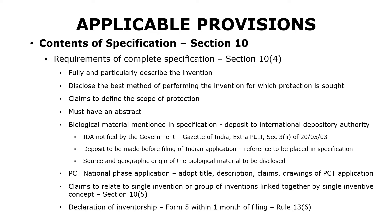Section 10(5) provides a very important requirement pertaining to the claims in the complete specification. It says that the claims should relate to a single invention or a group of inventions that are linked together by a single inventive concept. One patent application could relate to a single invention only, or the group of inventions should be linked by a single inventive concept. If there are multiple inventions in a patent application, you may have to divide the application at a later stage to derive different divisional applications. There is a specific legal position regarding dividing a patent application, and a separate video is available on this topic.